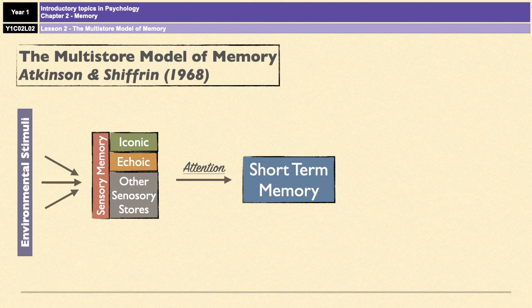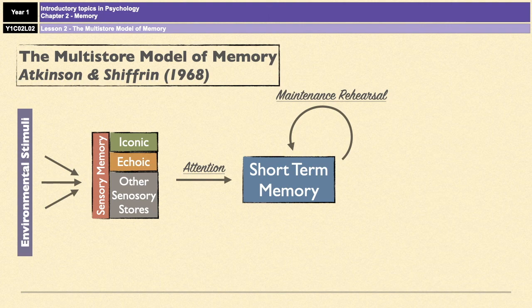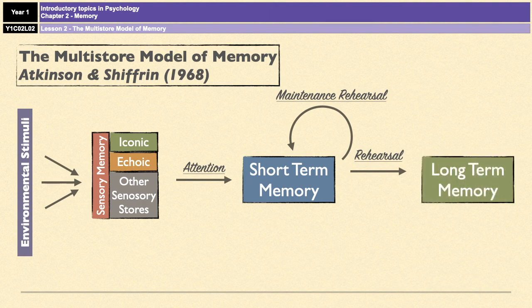Once information is in short-term memory, it can be kept there via maintenance rehearsal — essentially saying things to ourselves over and over again in order to keep them in our minds. If we do that for long enough, through something known as prolonged rehearsal, that then moves the information from short-term memory to long-term memory. Maintenance rehearsal and prolonged rehearsal are effectively the same thing; the only difference is that prolonged rehearsal is done for a longer period of time.